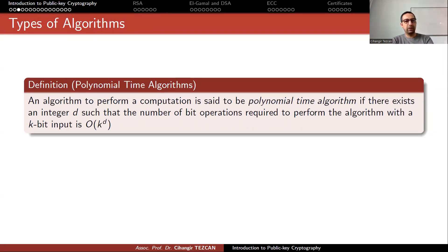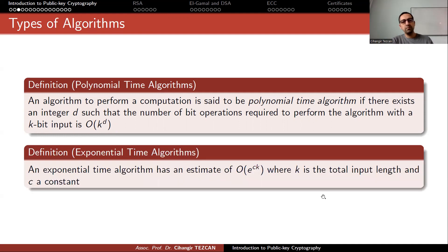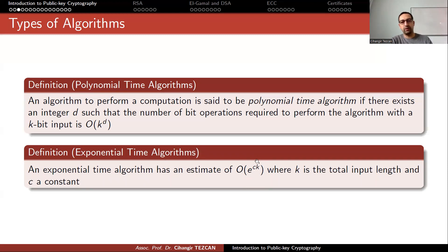Before understanding how these algorithms work, let's talk about some concepts. A polynomial time algorithm is one where there exists an integer D such that the number of bit operations required with a k-bit input is O(k^D). This means these algorithms are fast and our computers can handle them as k increases. But exponential time algorithms have an estimate of e^(ck), where k is the total input length and c is a constant. As k increases, this grows exponentially.